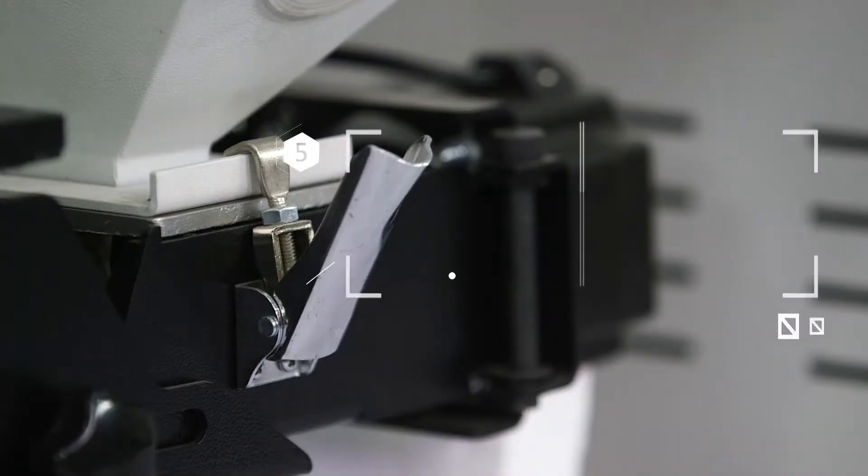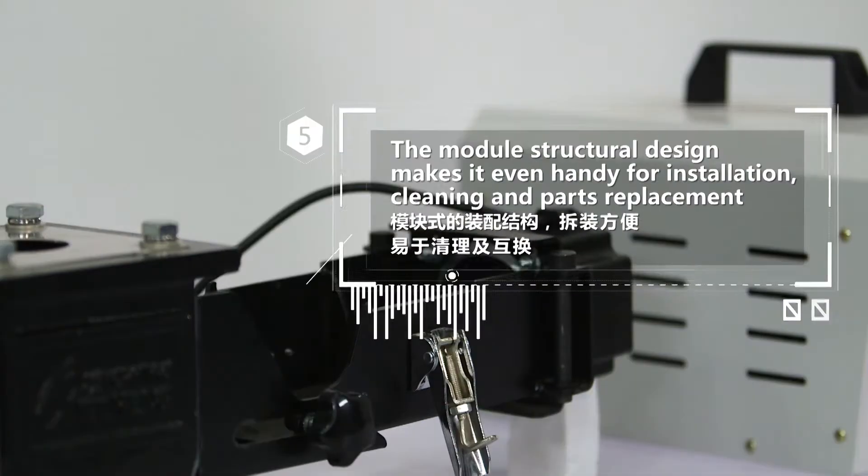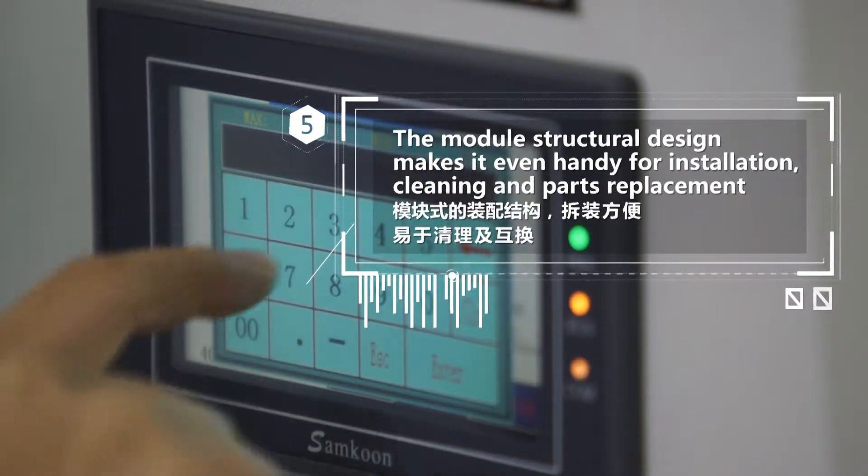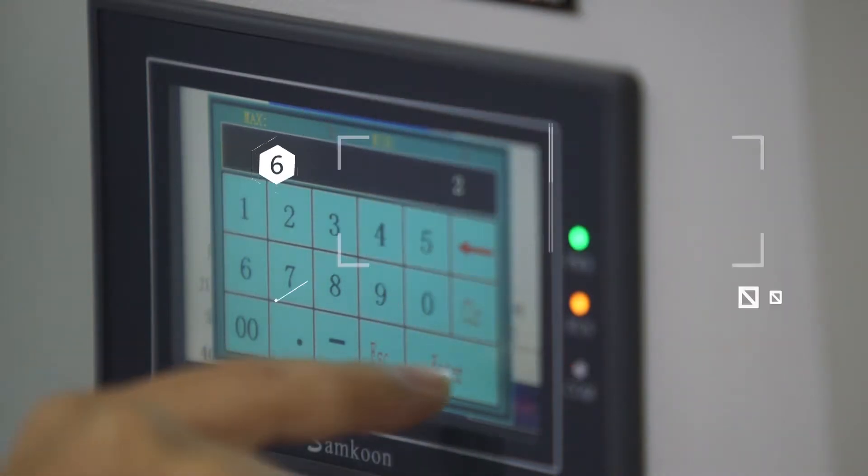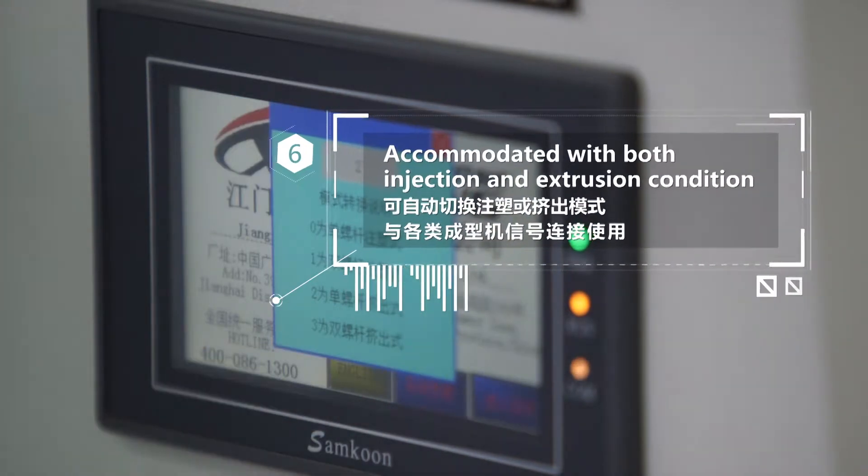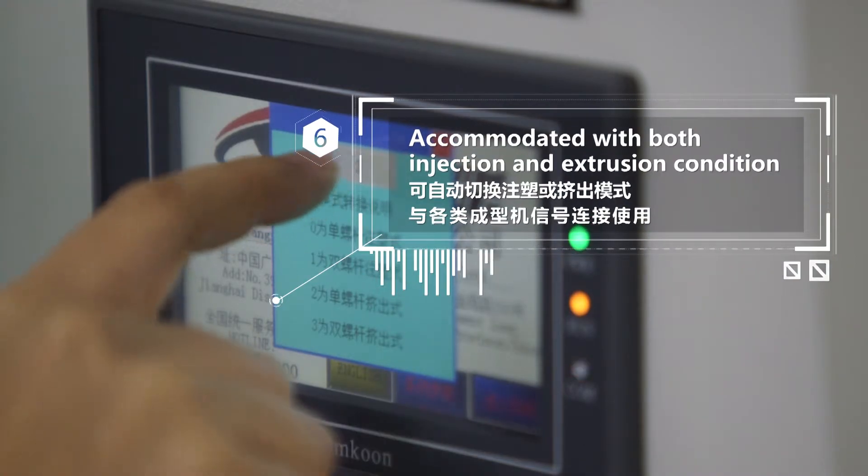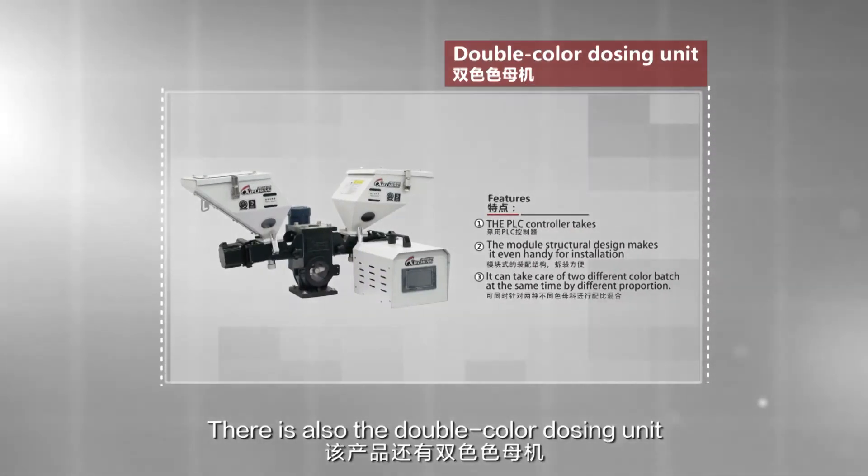5. The modular structural design makes it handy for installation, cleaning and parts replacement. 6. Accommodated with both injection and extrusion conditions. There is also the double color dosing unit.